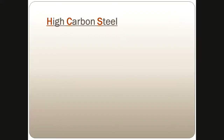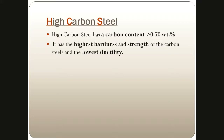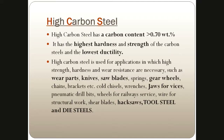High carbon steels have a carbon content greater than 0.7%. These are the most easily heat-treatable ones. Since the carbon content is high, they already have increased strength and enhanced mechanical properties. Out of the three carbon steels, they have the highest hardness and the highest strength, but with an increase in carbon percentage, these steels have the lowest ductility. They are used for highly specific applications where you require high strength, hardness, and wear resistance — for example, wear parts such as knives, saw blades, and gear wheels.